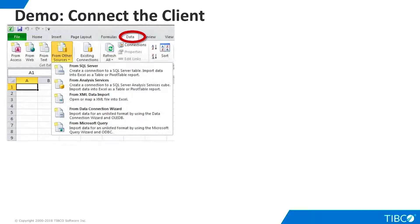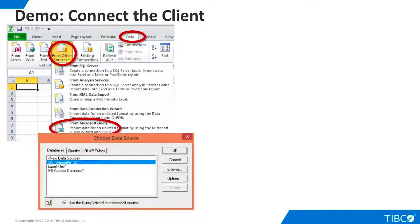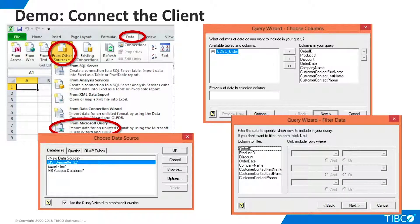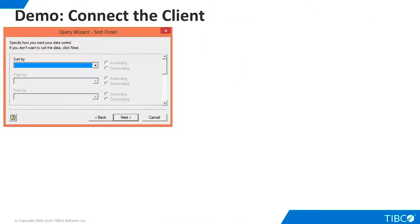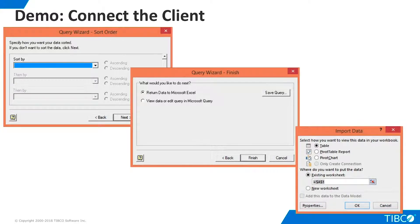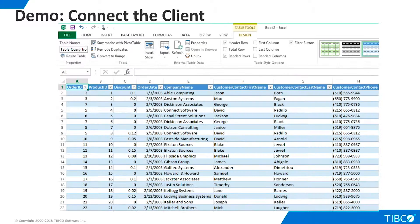Now we can connect the actual production client to TDV. In this demo, we will use Excel as our client. Go to the Data tab, choose From Other Sources, and then select From Microsoft Query. This opens the Microsoft Query wizard. We select the DSN we defined for TDV and click OK. Now we choose the columns we want to include and specify any filter criteria we want. Continuing with the Query wizard, we specify any sort criteria if desired, tell the query to return data to Excel, and tell Excel to import the data to the existing worksheet. The data is returned to Excel via the ODBC connection, and our demo is complete.